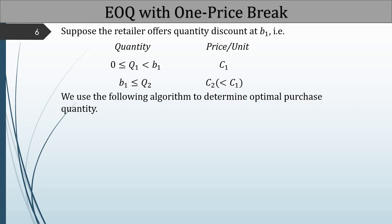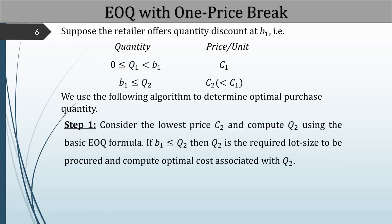Let us discuss the EOQ model with one price break. Suppose the retailer offers a quantity discount at B1. So the price break looks like: Q1 lies between 0 and B1 and Q1 units are available at price C1; and if Q2 is greater than B1, those units are available at price C2, where C2 is less than C1. Step 1 of the algorithm: consider the lowest price C2 and compute Q2 using the basic EOQ formula. If B1 is less than or equal to Q2, then Q2 is the required lot size and compute the optimal cost associated with Q2.